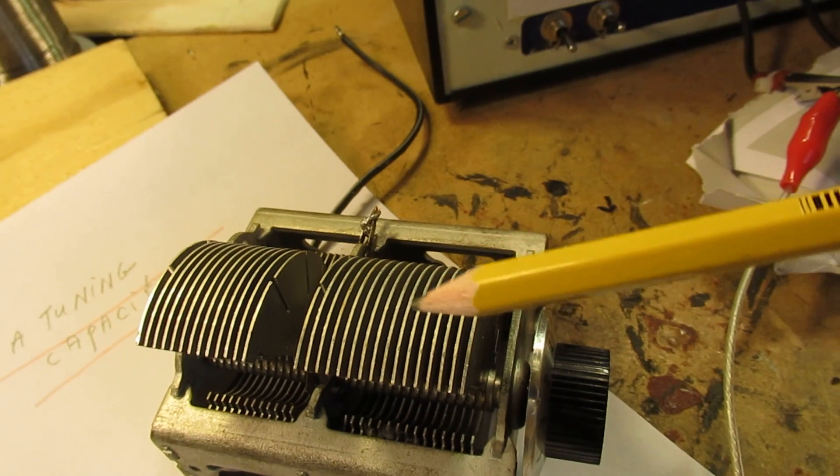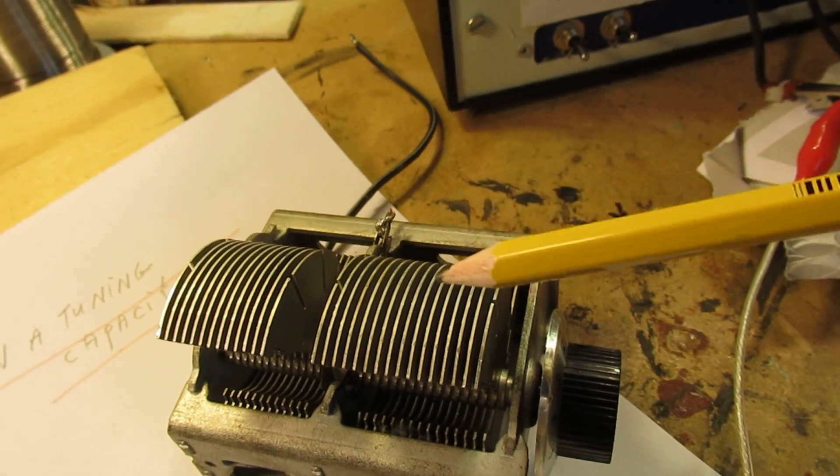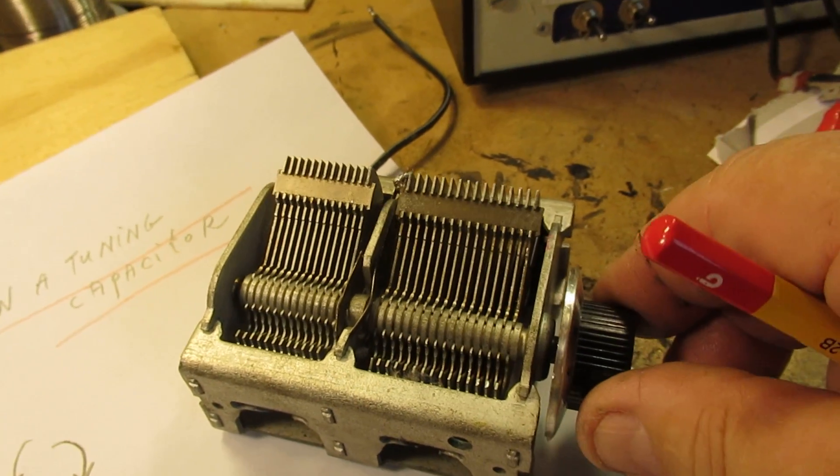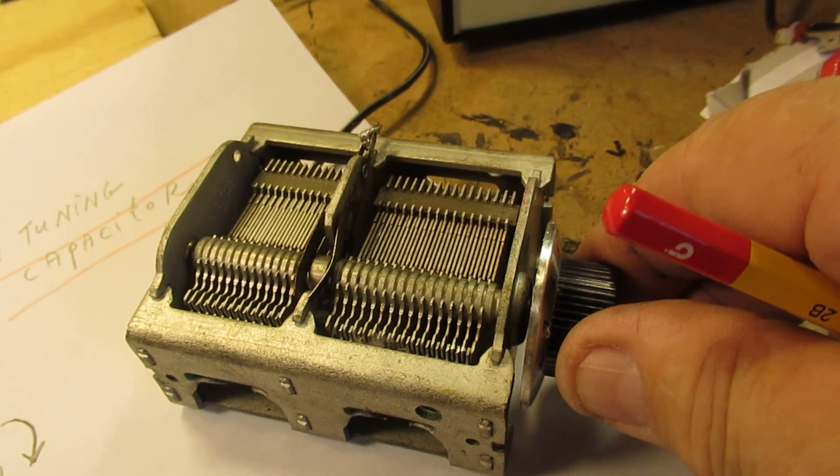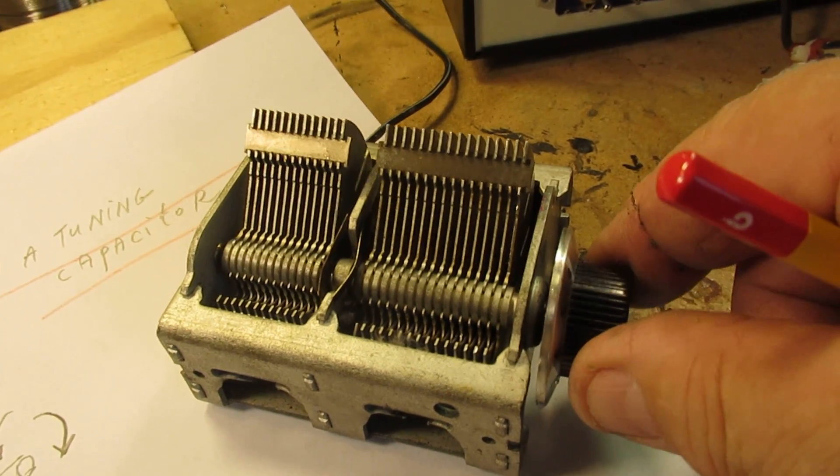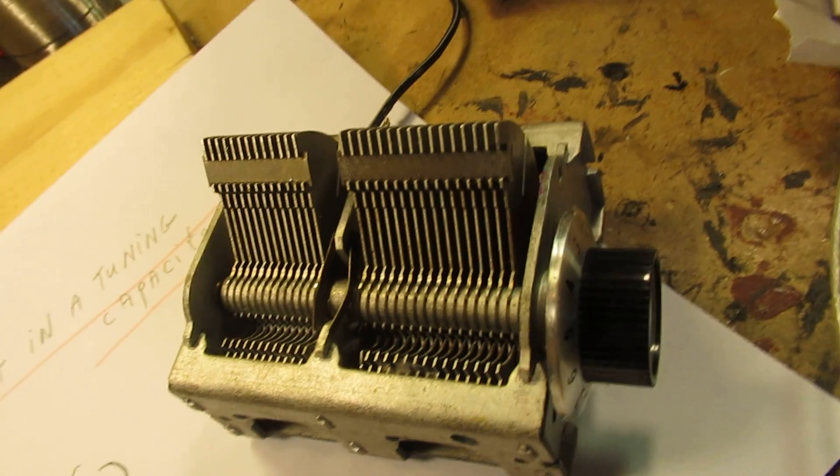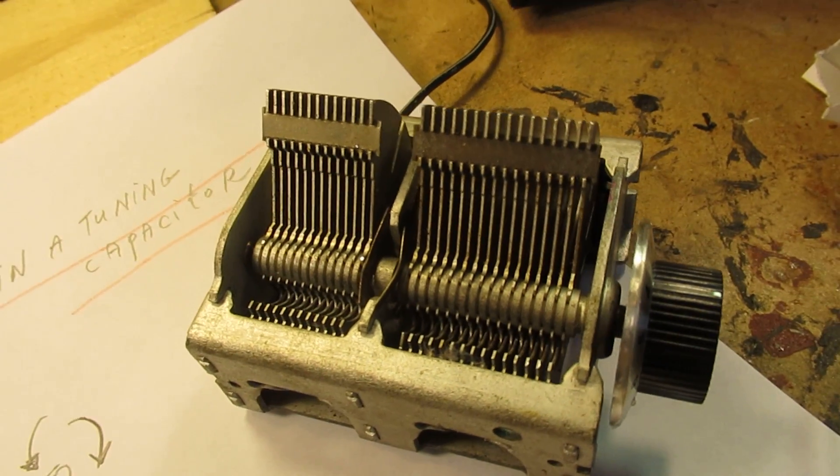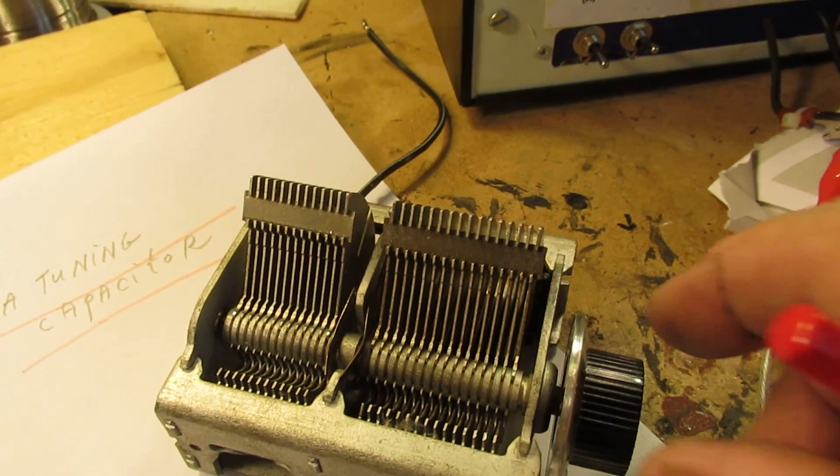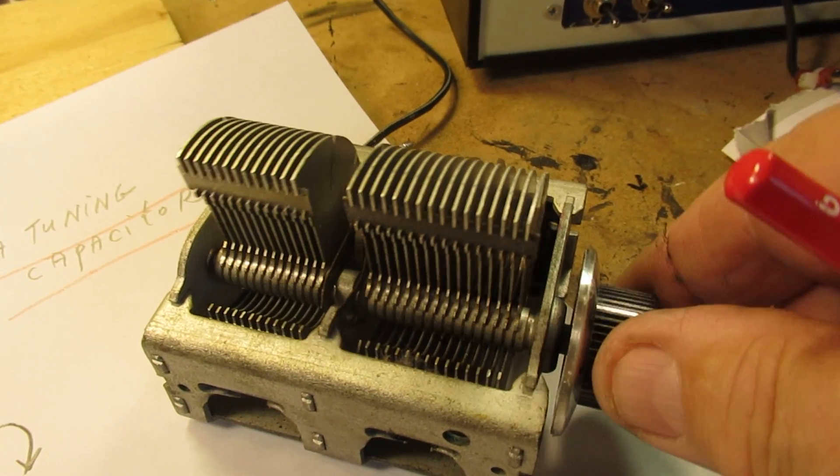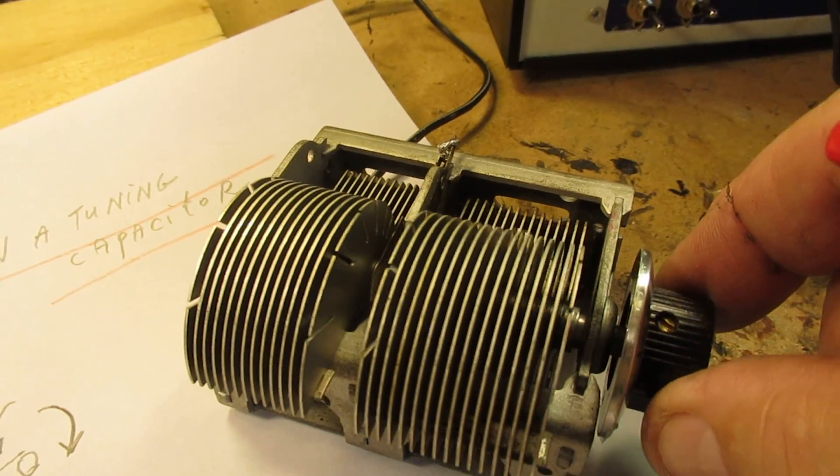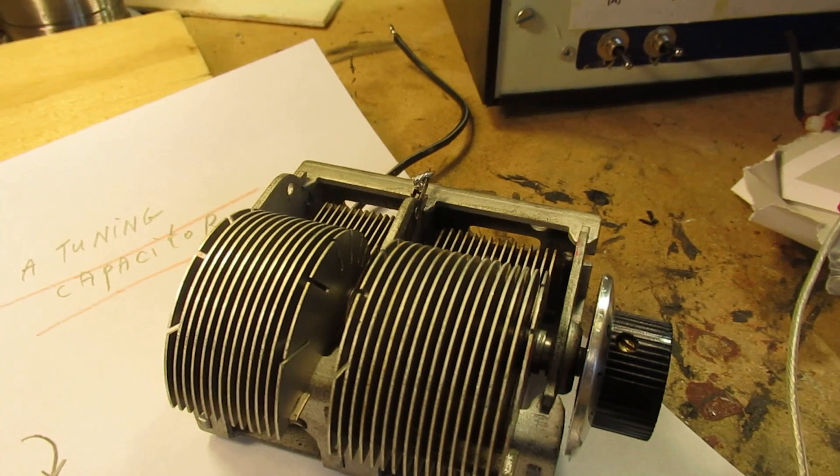The good quality of these old tuning capacitors is that they are in general not temperature sensitive. The old Philips tuning caps were made with INVAR, a special material that did not have or had a very low effect on temperature changes.